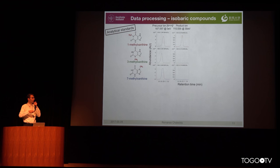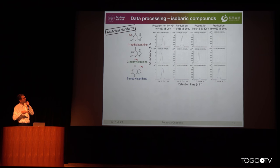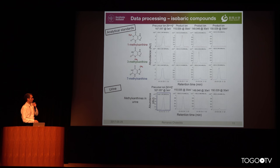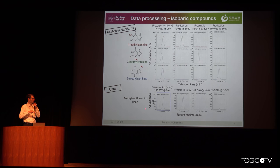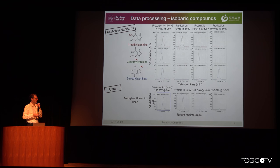However, if we look at their fragments at 30 electron volts, each compound produces a specific fragment — for example, m/z 110 for 1-methylxanthine and m/z 150 for 7-methylxanthine. Now if we look at the urine data acquired with the same method, we see a large peak for the precursor ion, but we cannot tell which methylxanthine it is.